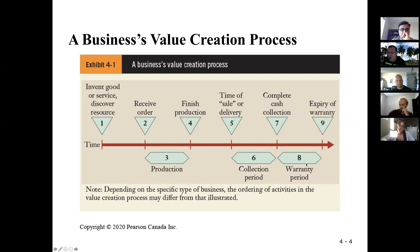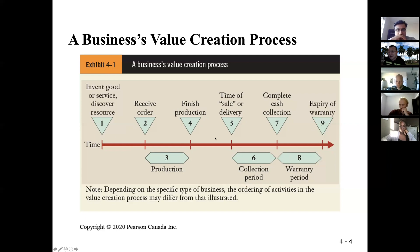And then there are warranty periods. Certain products have warranties — for example, electronics. If you buy electronics from Best Buy, in most cases there's a one-year assurance warranty from the manufacturer. So this is a typical value creation process. The question is: at what point should revenue be recognized? There are different alternatives along this chain — you could recognize revenue during manufacturing, upon delivery, or at the end of the warranty period.